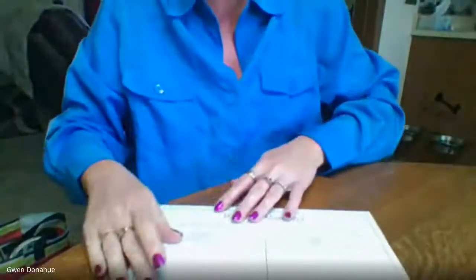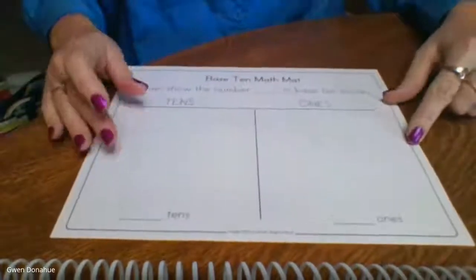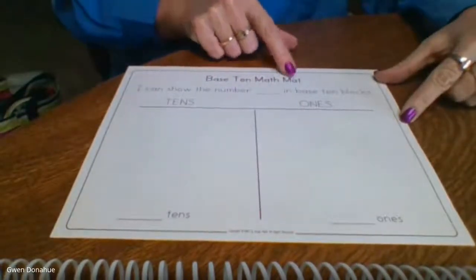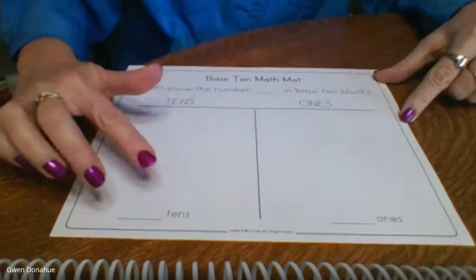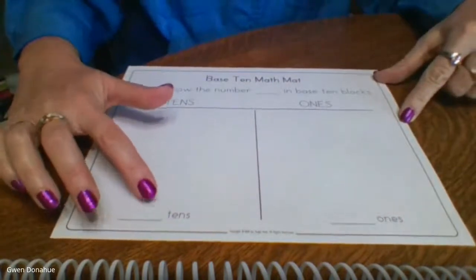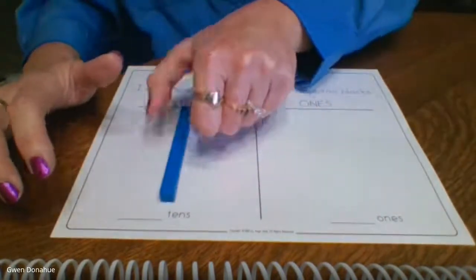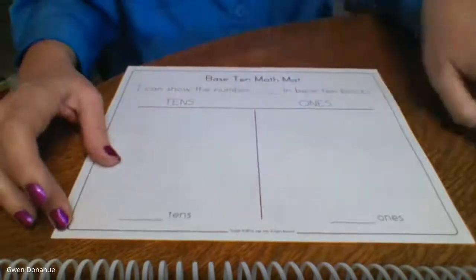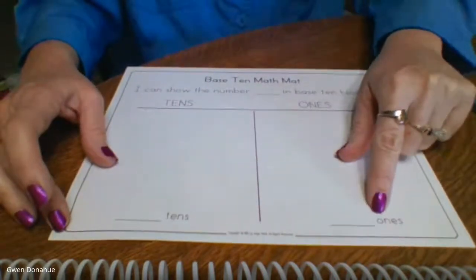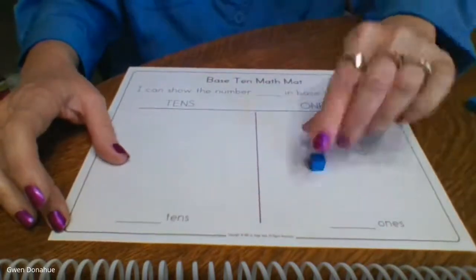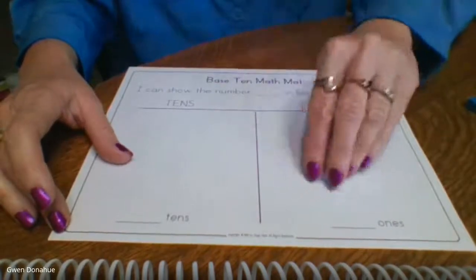So I have a little math mat that I want to show you. And you see here that this is my base 10 math mat. So on this side is where I place the tens. So if I have bars of 10, and on this side is where I place the ones, the ones that are all by themselves.